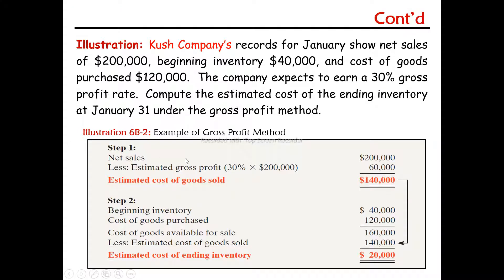Step 1: Estimated gross profit equals gross profit percentage times net sales. Then: net sales minus estimated gross profit equals estimated cost of goods sold. The estimated cost of goods sold must be less than the cost of goods available for sale.